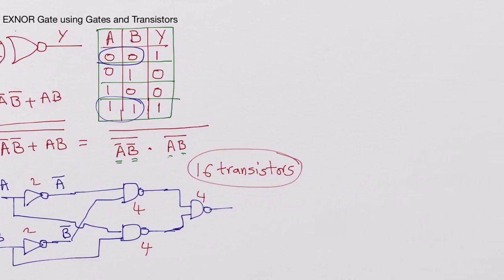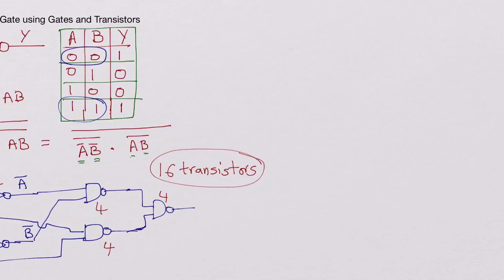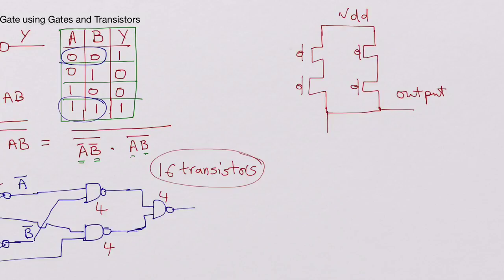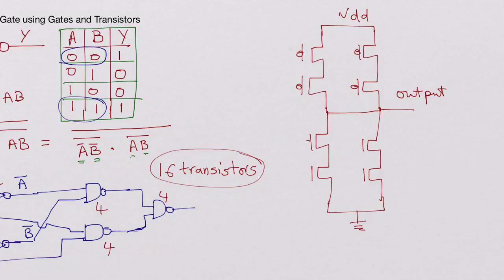Now let's do the same thing using the transistor-level approach similar to the CMOS exclusive OR gate. Here we have two PMOS devices in series forming a branch, and two such branches in parallel. The sources of the PMOS devices are connected to VDD, and the output is taken from the drain side. Similarly on the ground side, we have two NMOS transistors in series forming two branches in parallel, with the bottom connected to ground.